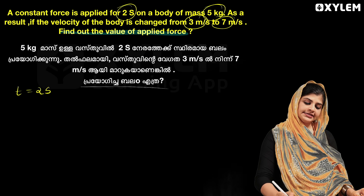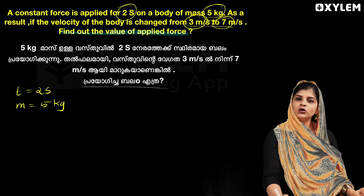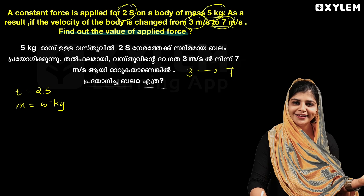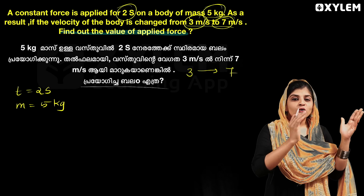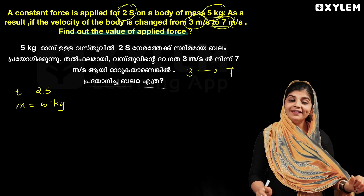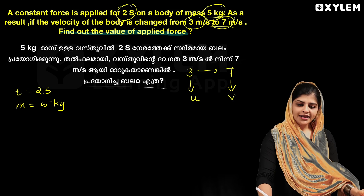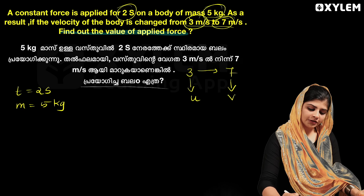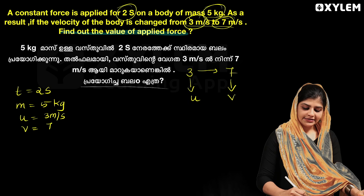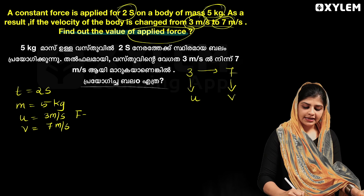Time is equal to 2 seconds, and mass M is equal to 5 kg. We have two velocities: initial velocity U is equal to 3 meters per second, and final velocity V is equal to 7 meters per second. Applied force F is equal to how much? We need to find that.